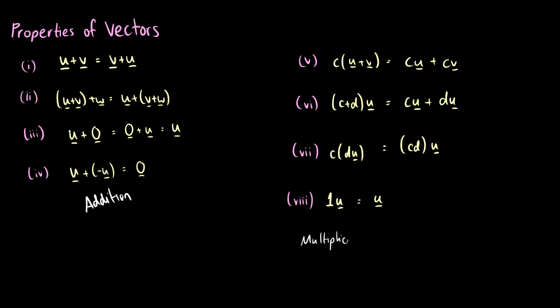Five, six, seven, and eight are all multiplication properties. Property five says that if we take a scalar c and multiply it by the vector u plus v, this is the same as c times vector u plus c times vector v. We saw this in the last video. Number six says if we take two scalars and add them together and multiply by a vector, it's c times the vector plus d times the vector. Number seven says we can multiply scalars first, and number eight says if we multiply any vector by one, you get the same vector back.